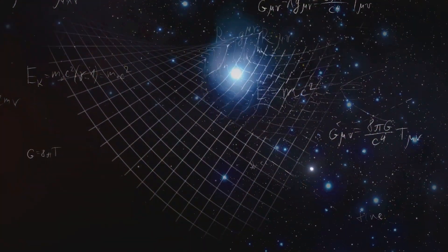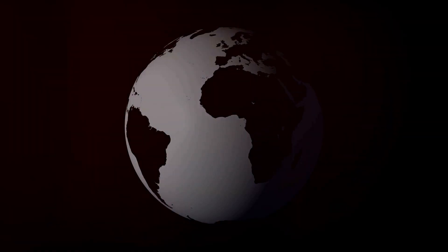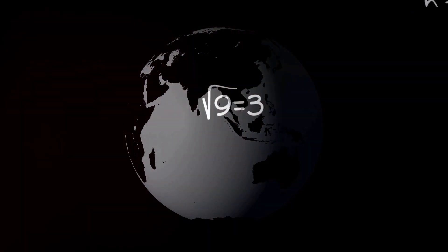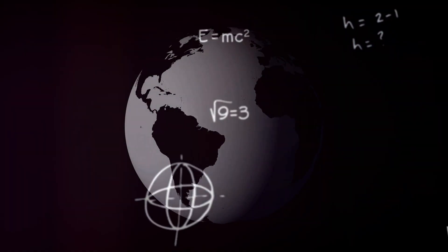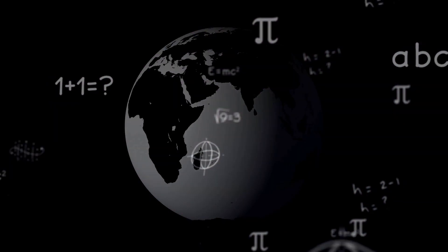So what does all this mean? It means that our perception of now is not absolute but relative, shaped by our motion through space and time. This means that what we perceive as now might not be the same for others.